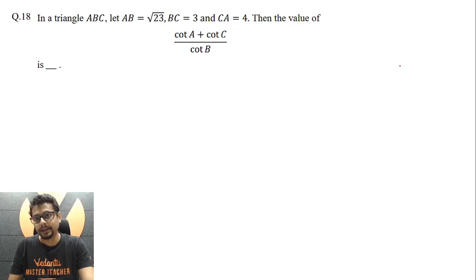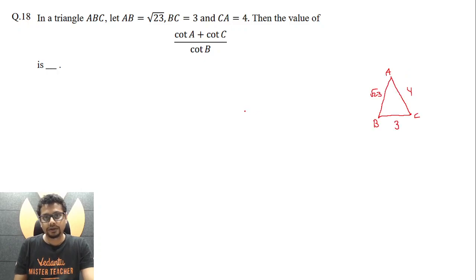Here clearly this is an acute angle triangle. The side length a is 3, side length b is 4, and side length c is √23. Now I know all the sides of this triangle and what I have been asked is (cot A + cot C) / cot B. So I would like to write everything in terms of sides and get my answer.